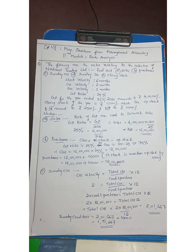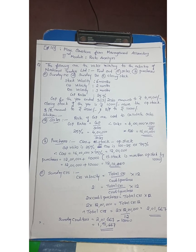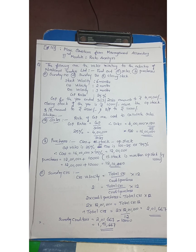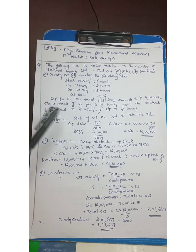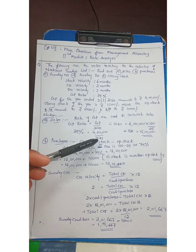The first thing is sales. Sales is directly related to the trading account of the company. The GP ratio is the main hint used for the calculation of sales. The GP ratio is taken for the calculation of sales. The GP ratio is given — it is 25% of sales. GPA is 4,00,000.